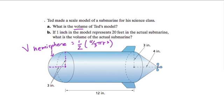In the middle here we have a cylinder. The volume of a cylinder is found by multiplying the area of the circle — pi r squared — times the height. So we'll come back to the volume of that cylinder.